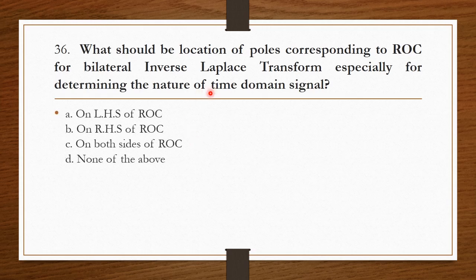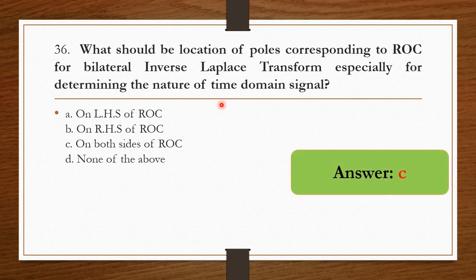For the bilateral inverse Laplace transform, what should be the location of poles corresponding to the ROC for determining the nature of the time domain signal? The poles should be on both sides of the ROC region of convergence. Therefore option C is the right answer.